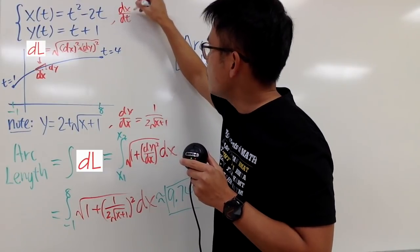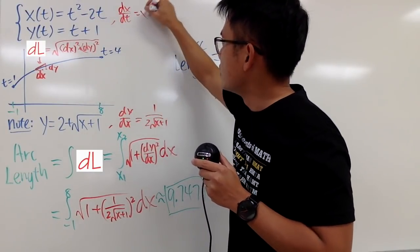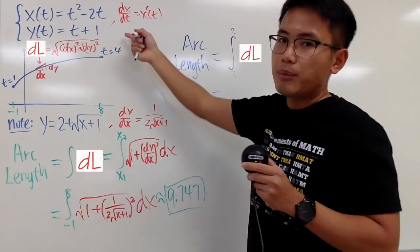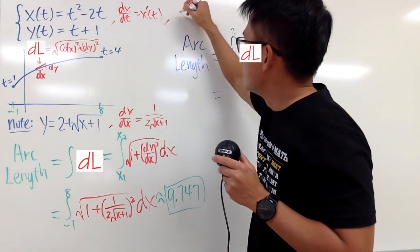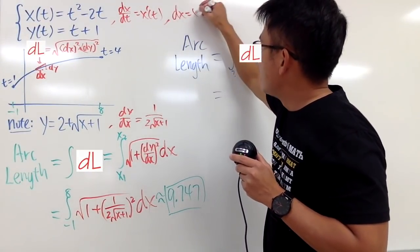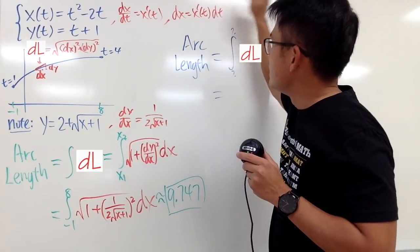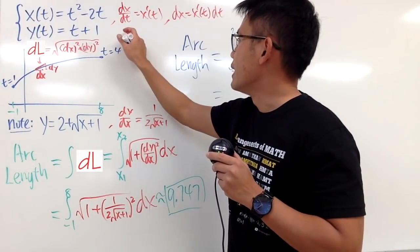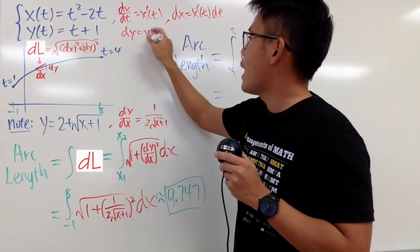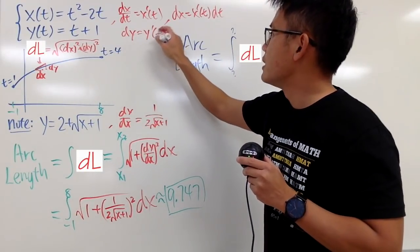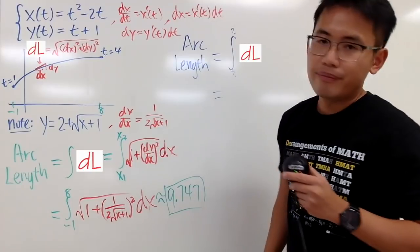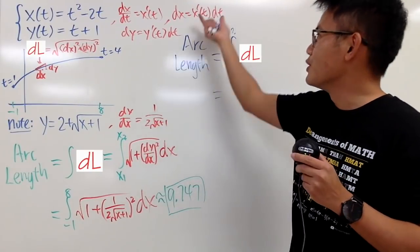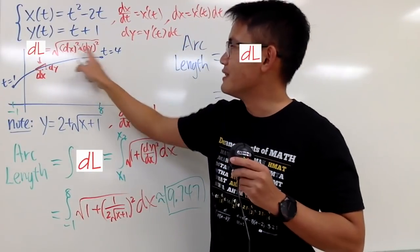You get dx/dt, which is just the derivative on the right-hand side, and you can multiply dt on both sides. So you get dx equals x' dt. And similarly, you can do the same thing. So you will get dy equals y' dt. And yes, we are just going to plug in this and that for this and that.